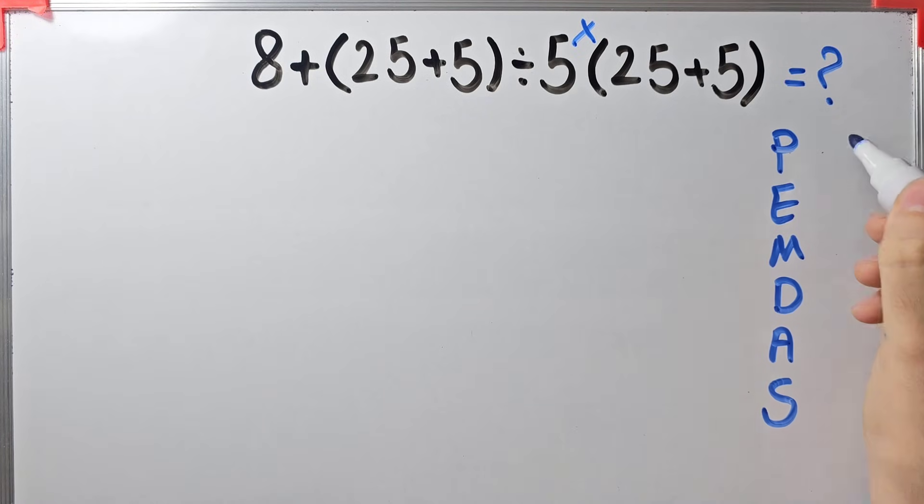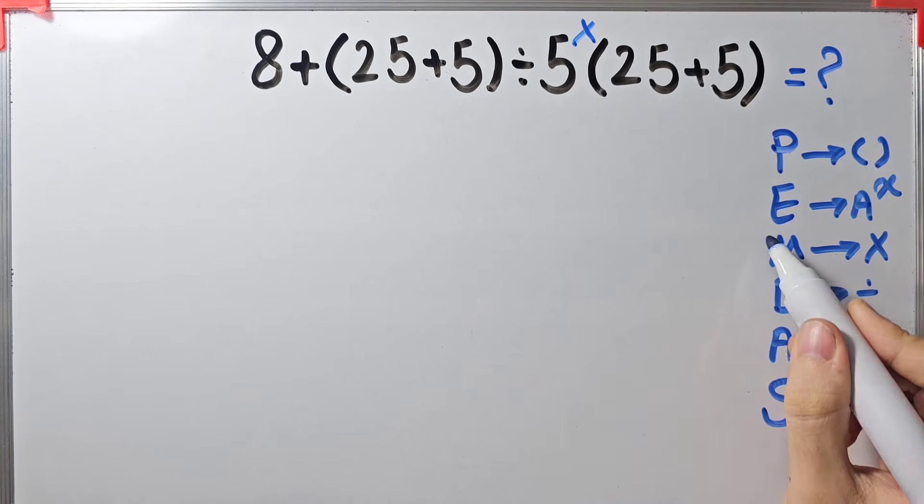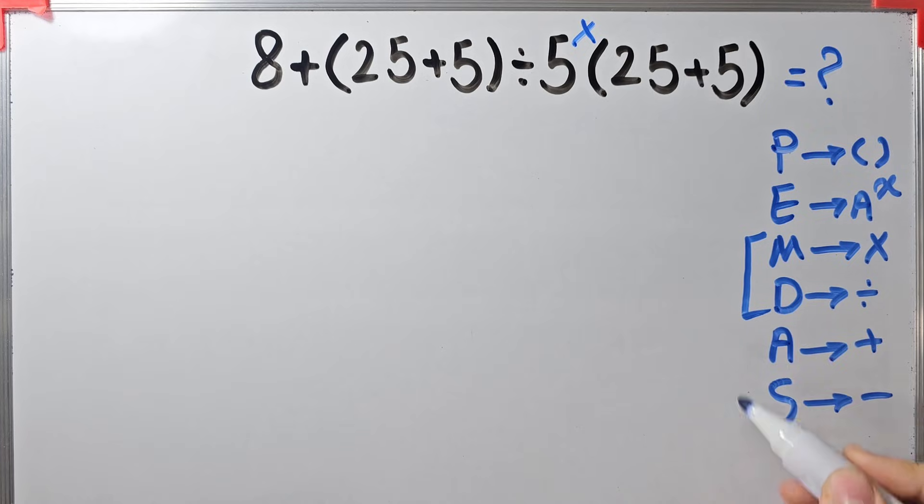In this rule, P stands for parenthesis, E stands for exponent, M stands for multiplication, D stands for division, A stands for addition, and S stands for subtraction. Multiplication and division have the same level of priority. Also, addition and subtraction have the same level of priority.